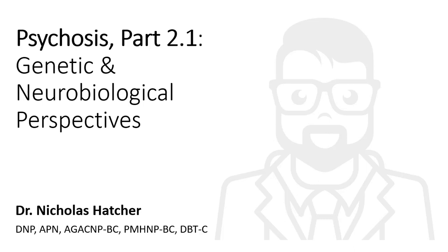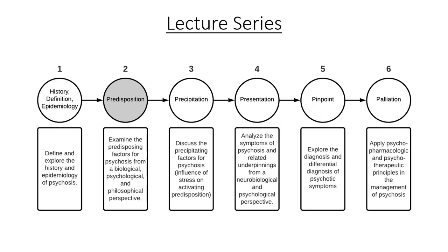In this section on the predisposing factors for psychosis, I will have separate lectures exploring the psychological and philosophical implications. In the neurobiology of psychosis, there are alterations that we can identify lying on a spectrum from superficial to deep, macroscopic to microscopic. We will weave through these levels in the most suitable way in order to gain clarity of the underlying neurobiological predisposition.